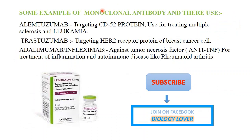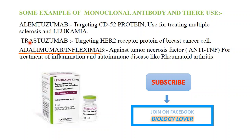Some examples of monoclonal antibodies: alemtuzumab targets the CD52 protein receptor present on leukemia cells and tries to destroy the leukemia cell; it is also used for multiple sclerosis. Trastuzumab targets the HER2 receptor protein on breast cancer cells and tries to recognize and destroy them. Adalimumab and infliximab work against tumor necrosis factor by binding to it, so they work in inflammation and different types of autoimmune disease such as rheumatoid arthritis.